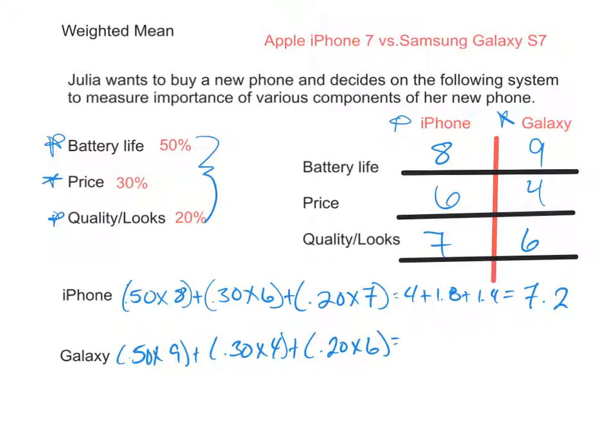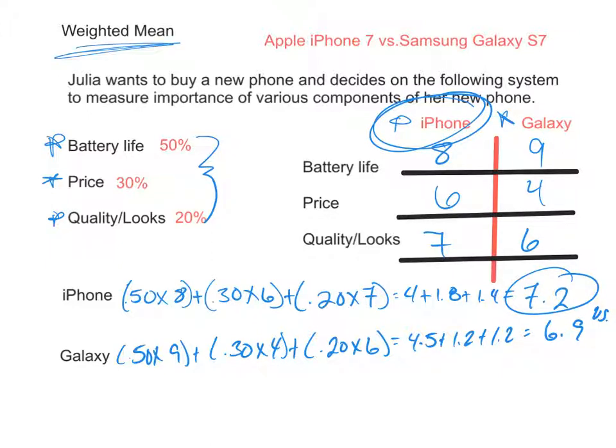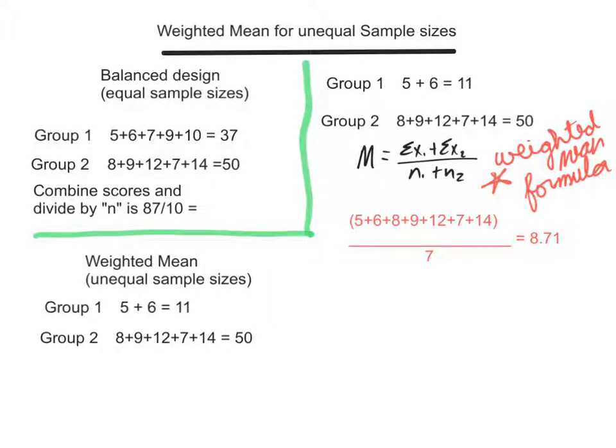So we're going to have 4.5 plus 1.2 plus 1.2. The overall rating considering the weighted mean for the Galaxy was 6.9, so she's going to go with the iPhone as it had a higher rating of 7.2 versus 6.9. That's one way you can use this concept of weighted mean.